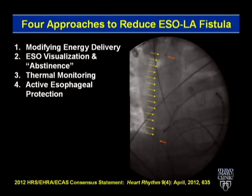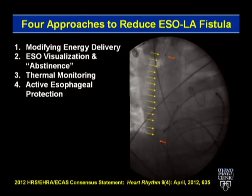The consensus document describes four approaches to reducing esophageal injury — none validated, all hunches. Modifying energy delivery was used by three-quarters: instead of 30–40 watts on posterior wall, use 15–20 watts or drag over the area without releasing energy. Second: visualize the esophagus with ultrasound and thermal probes and abstain from ablating over it. Third: thermal monitoring — I avoid going more than two degrees above baseline, though thermal probes are fraught with position-dependency problems. The first time we used a probe, the temperature went to 44 degrees, initially alarming us before we realized it was from our lesions.